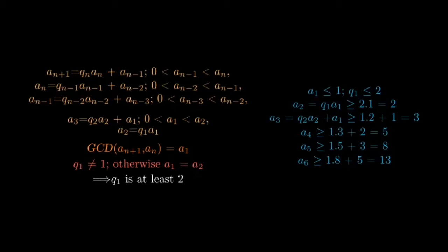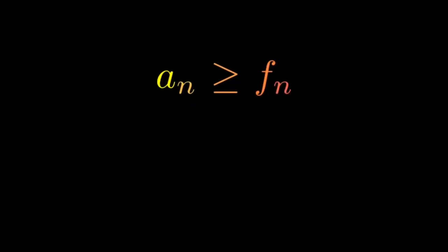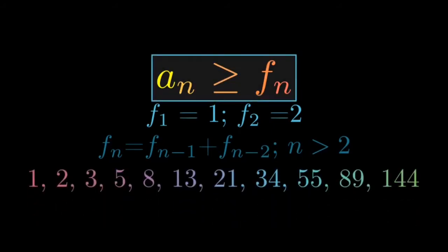Next, a_3 which is equal to q_2 times a_2 plus a_1 greater than or equal to 3. Note that the quotients other than q_1 can be equal to 1. Proceeding further, we get a_4 greater than or equal to 5, a_5 greater than or equal to 8, a_6 greater than or equal to 13 and so on. Can you see the Fibonacci numbers making their appearance? This pattern continues and we see that in general, a_n is greater than or equal to f_n where f_n is the nth Fibonacci number. The base cases here are a bit different though from the original sequence. Here F_1 is defined as 1 and F_2 is defined as 2 and the remaining terms are defined by the recurrence relation f_n equals f_{n-1} plus f_{n-2}.